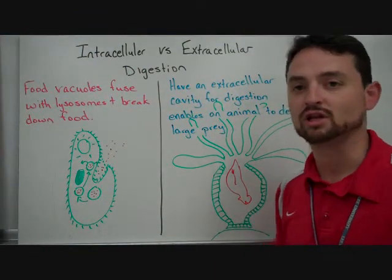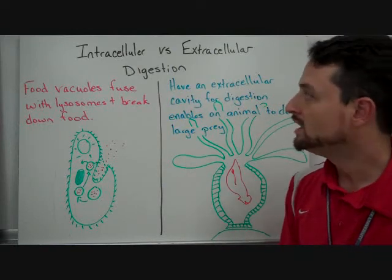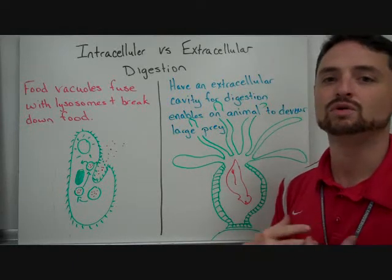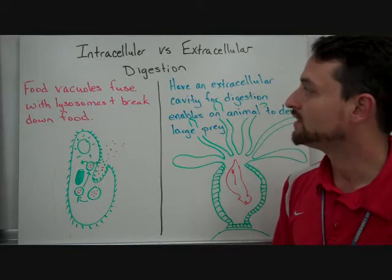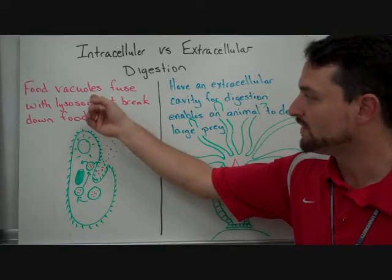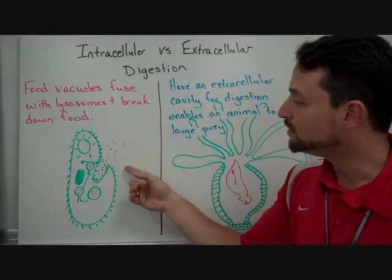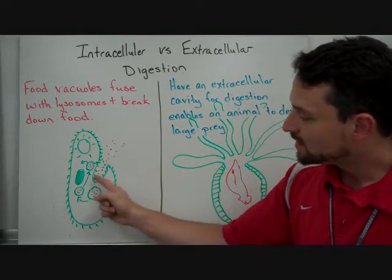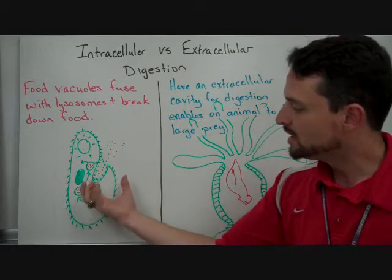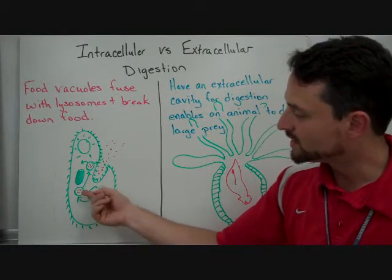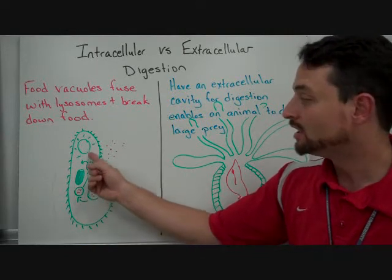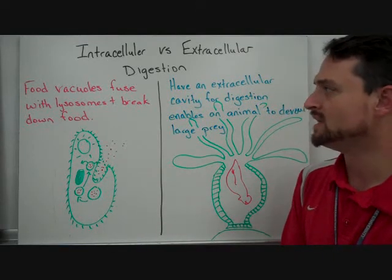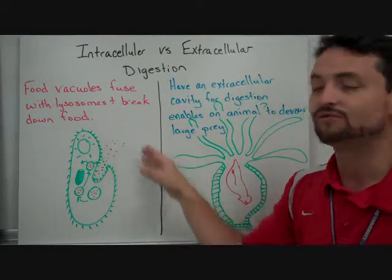There are two different types we can look at here: intracellular versus extracellular digestion. In intracellular digestion, many people would mistakenly say that we do intracellular digestion, which they would be incorrect. Intracellular deals with food vacuoles fused with lysosomes to break down the food. This is a crude drawing of a paramecium. Food would come in through phagocytosis, be encompassed into a sac, join with a lysosome, and break down. Those molecules would either go into the cell or whatever wasn't needed would be released.